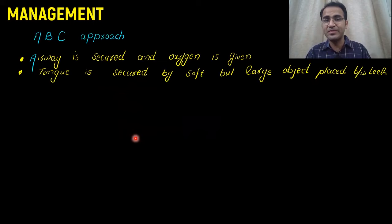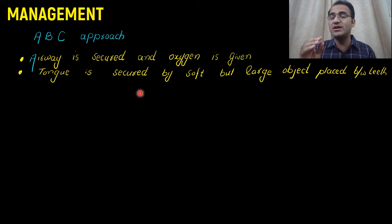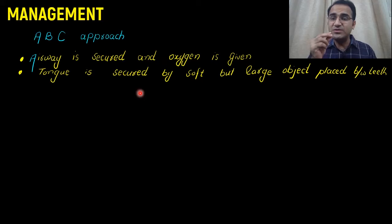Management of status epilepticus involves an ABC approach. You first check and secure the airway and give oxygen to the patient. The tongue is secured by placing a soft object between the teeth. Never put your hands in the mouth of anyone who is seizing, because they can bite your fingers off. To protect their tongue, place a soft object between the teeth so they do not chew their tongue.